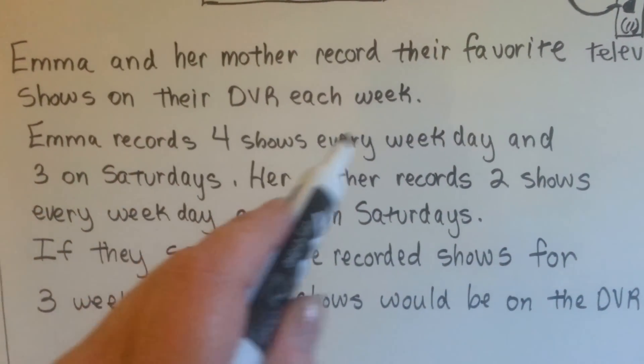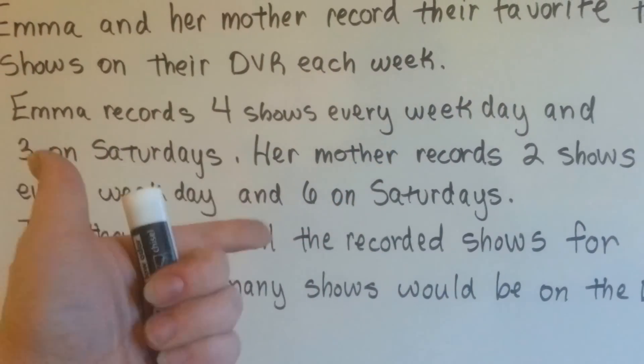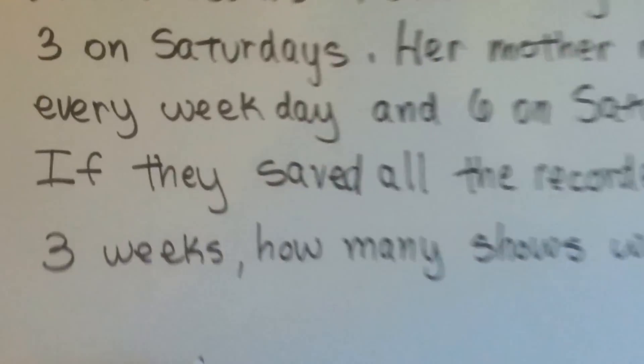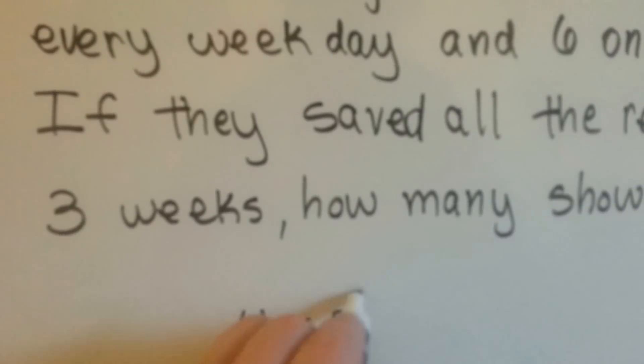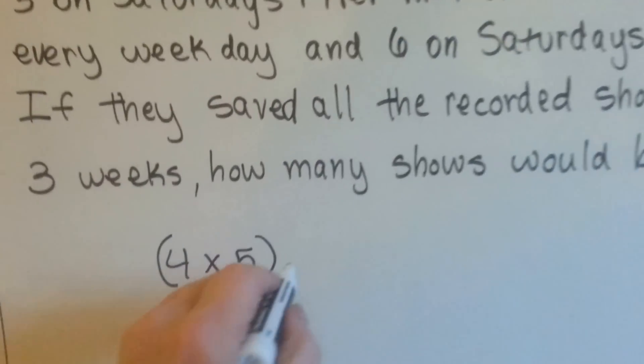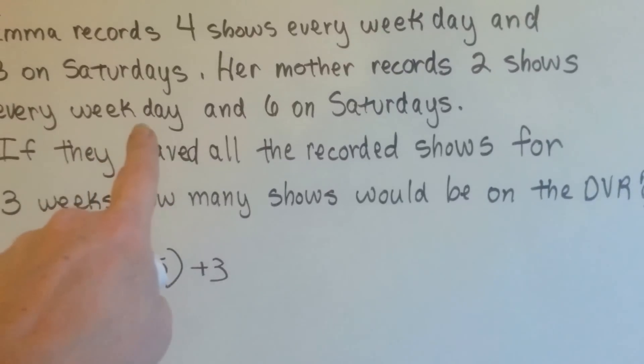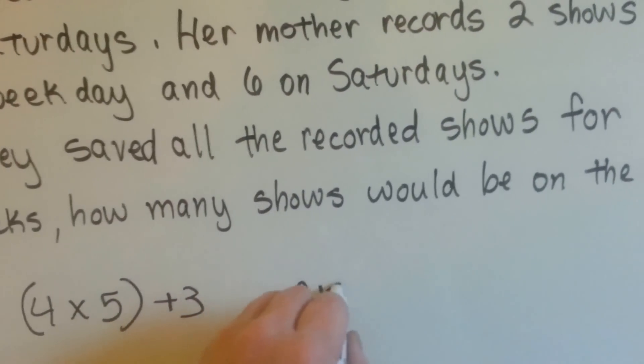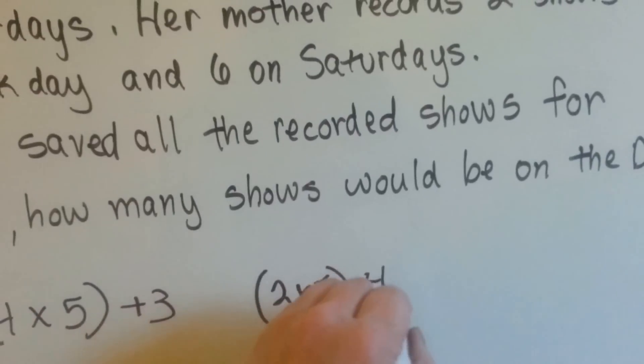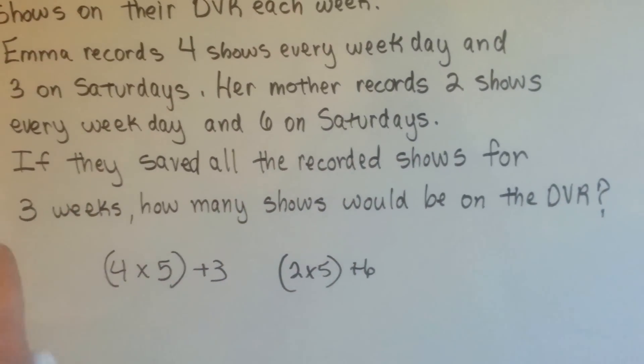She records 4 shows every weekday. Well, a weekday does not mean a weekend, it doesn't mean Saturday and Sunday. That just means Monday, Tuesday, Wednesday, Thursday, Friday. That's 5 days. So she's doing 4 shows for 5 days, the weekdays. So 4 for 5 days. And then she's doing 3 on Saturdays. So we need to add the 3 on the Saturdays. And now her mother records 2 shows on the weekdays, every weekday. So her mother is doing 2 times 5. And her mother does 6 on Saturdays. So we have to add the 6 that she does on the Saturdays.